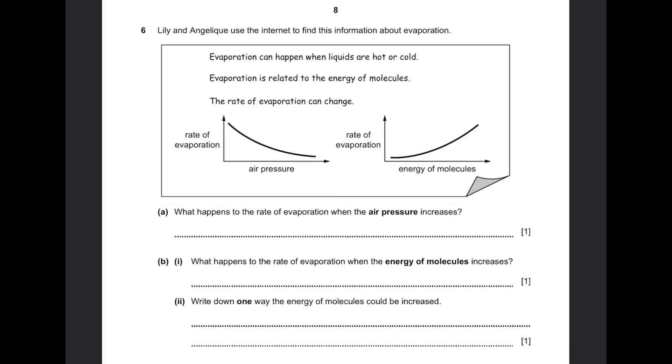Part B, 1: What happens to the rate of evaporation when the energy of molecules increases? It also increases. I just said this as well. Part 2: Write down one way the energy of molecules could be increased. This is very simple. Just heating or making the temperature increase. That's the answer.